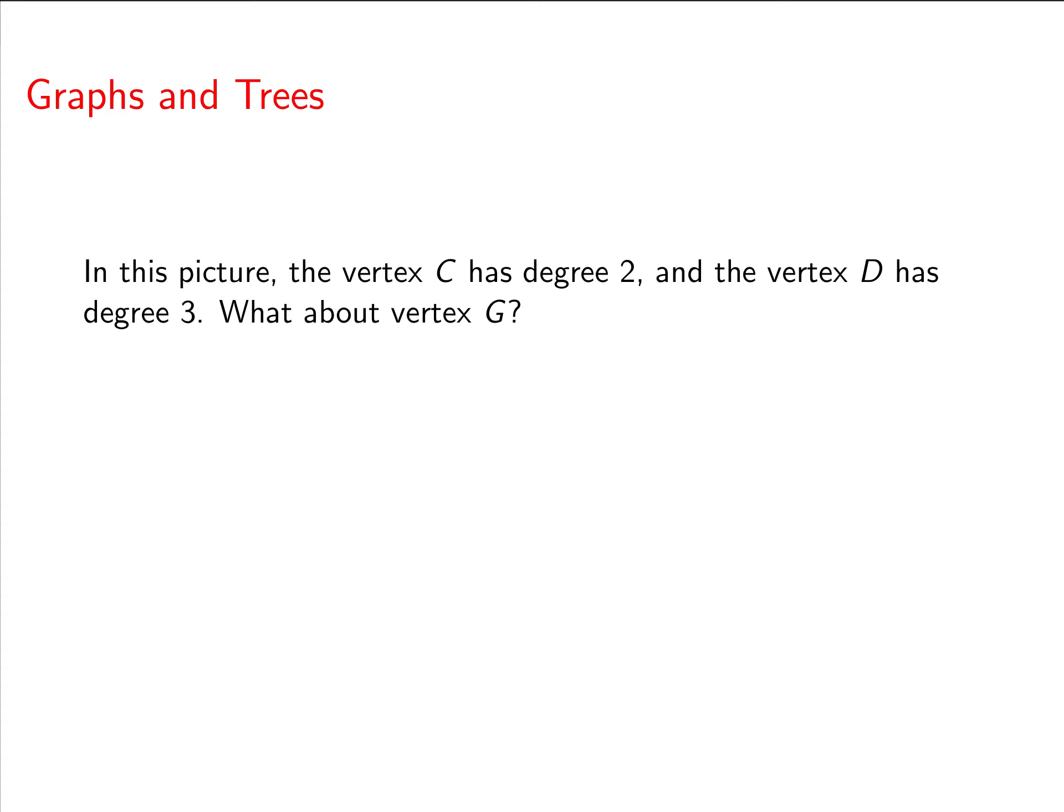What about vertex G? We're going to say that vertex G has degree 0. There are no edges connecting to it. Remember, we had a term for that. It's called isolated.